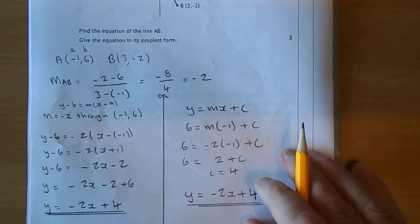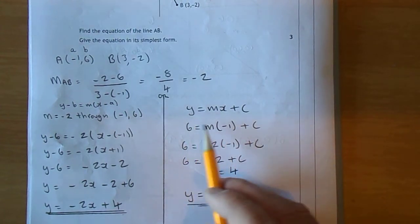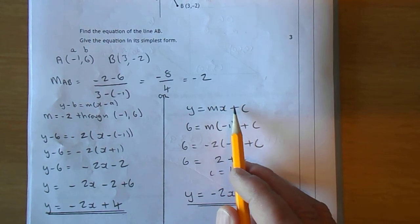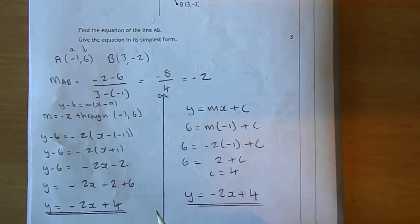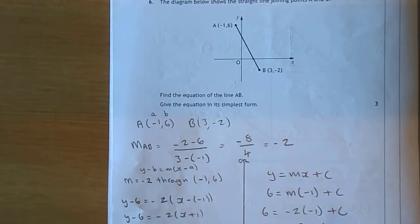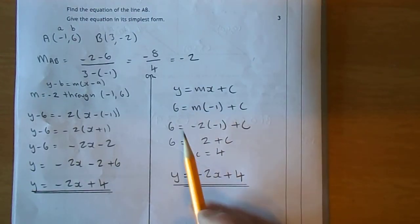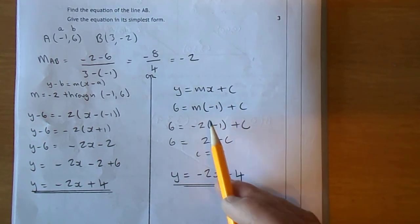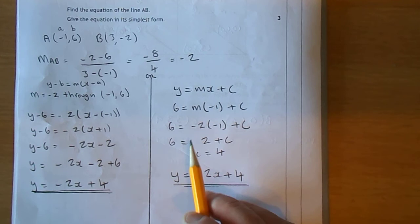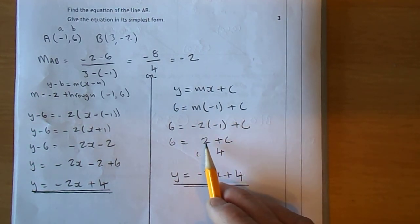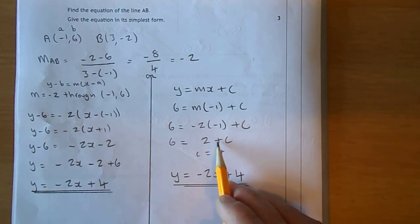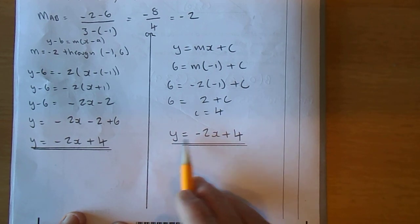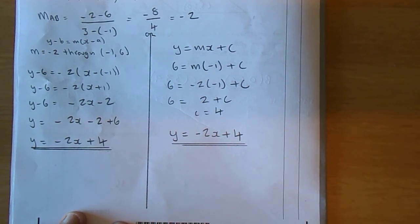If you were taught Y equals MX plus C, then for any point on the line, the Y coordinate is M times the X coordinate plus a certain number. And if we choose the minus 1, 6 again, then it means that 6 has to be M times the X coordinate of minus 1 plus C. But we know the gradient is minus 2. Minus 2 times minus 1 is 2. So 6 is 2 plus something. Of course, that's 4. So C is 4. So whichever way you work it out, Y is minus 2X plus 4.